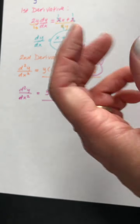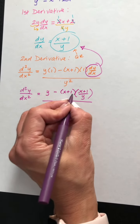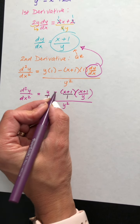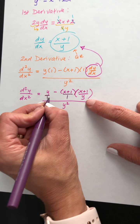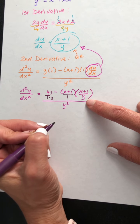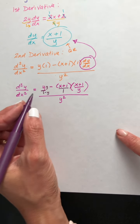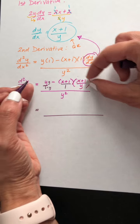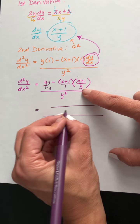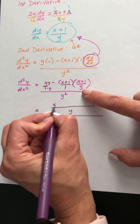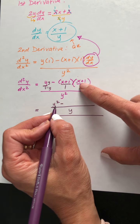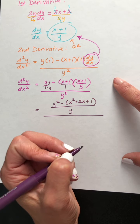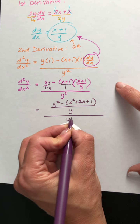So we have y minus (x plus 1) times (x plus 1 over y), all over y squared. This is a fraction times a fraction — multiply straight across numerator and denominator. I need a common denominator, so multiply top and bottom by y. Rewriting: the numerator is a fraction, so y squared minus (x plus 1)(x plus 1). Foiling x plus 1 times x plus 1 gives x squared plus 2x plus 1. All over y squared.